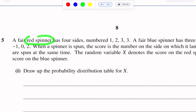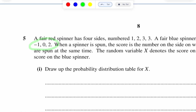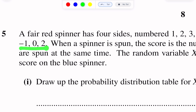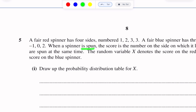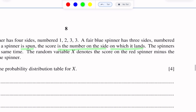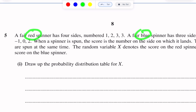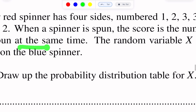The red spinner is numbered 1, 2, 3, 3. A fair blue spinner has 3 sides numbered minus 1, 0, 2. When a spinner is spun, the score is the number on the side on which it lands. Both spinners — red and blue — are spun at the same time.